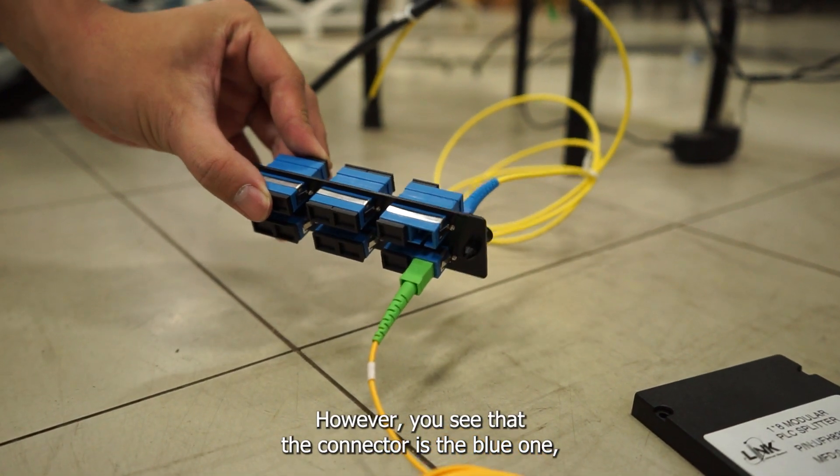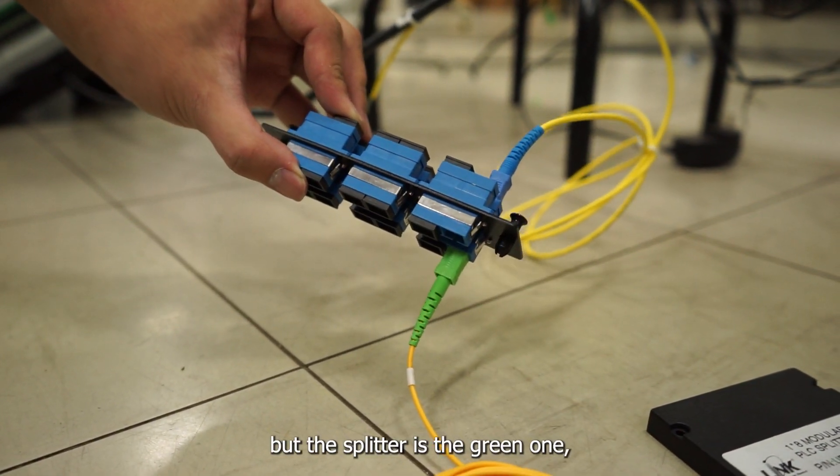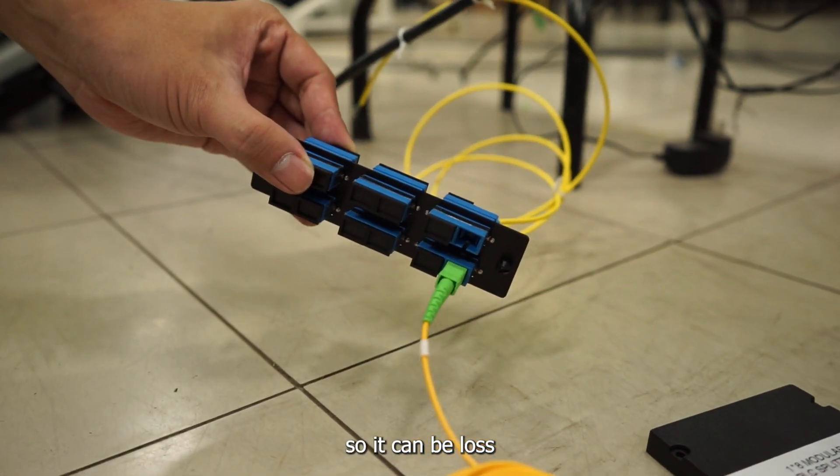You'll notice the connector is blue while the splitter is green. Loss can occur at this point due to this mismatch.